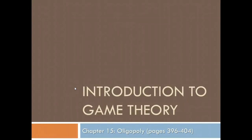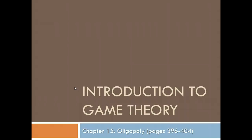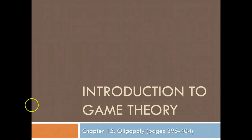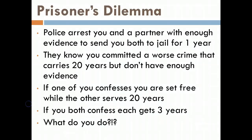Welcome back everybody. Today we're going to begin to look at game theory, which is one way that economists try to make some sense out of the market structure known as oligopoly. The information is in your book in chapter 15. We're going to understand how oligopoly is explained using game theory, and we'll explore the idea of what's known as a prisoner's dilemma.